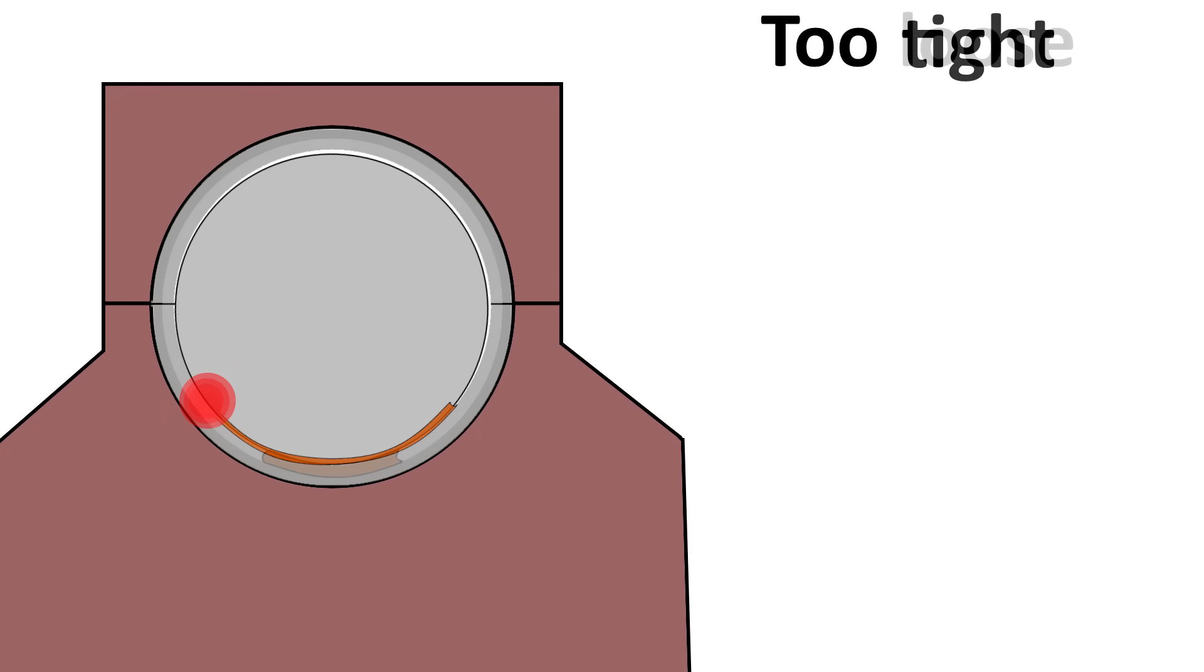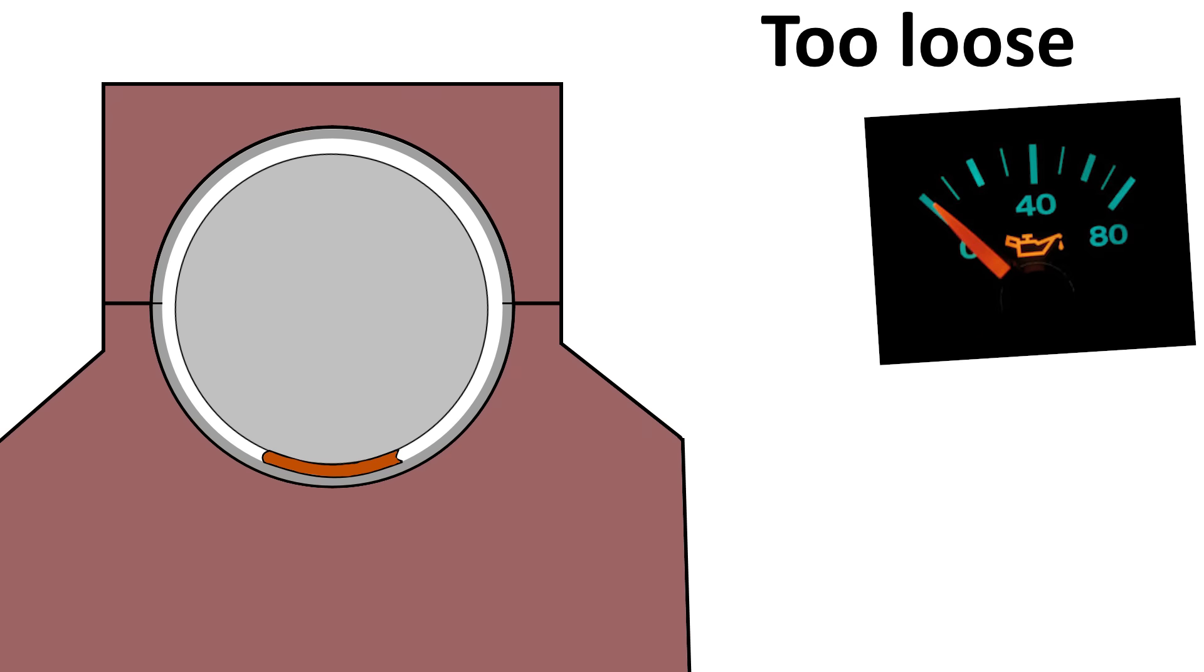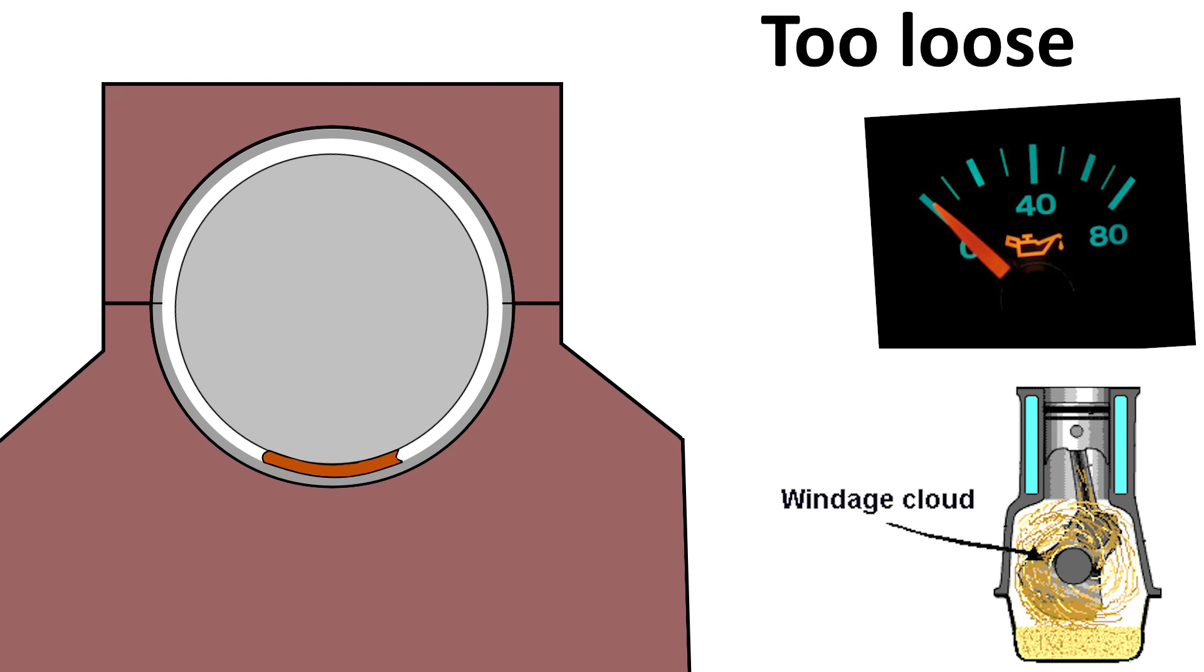On the other hand, clearances that are too loose will make it difficult for your oil pump to maintain desired oil pressure, and will also result in too much oil coming out from the sides of the bearings, which will increase crankcase windage and reduce power a bit.